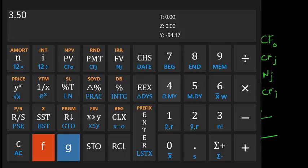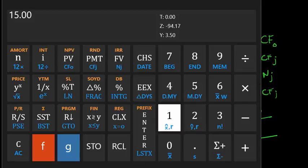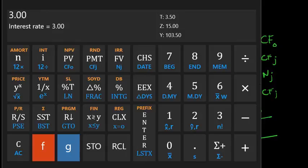3.50, positive cash flow 1. We're going to repeat this 15 times. 15 over N. Then the final cash flow will be 103.50. This into the 16th cash flow. And we're going to discount this at an interest rate of 3. F, net present value.